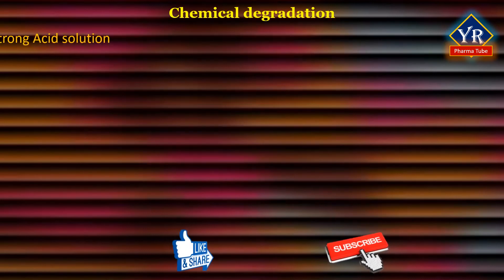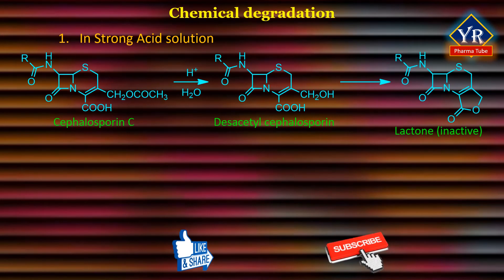Degradation in the presence of a strong acid solution: Cephalosporin C undergoes hydrolysis in the presence of a strong acidic solution to form the desacetylcephalosporin derivative, in which the acetyl group at C3 is eliminated. This desacetylcephalosporin upon lactonization produces a lactone derivative of cephalosporin, which is virtually an inactive compound.